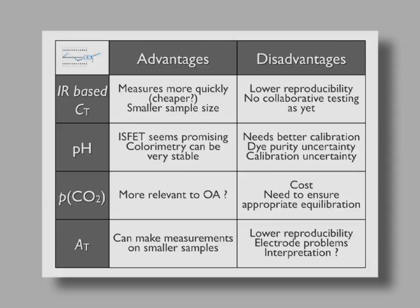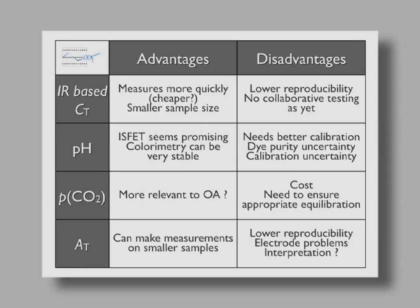For alkalinity, we currently measure 100 ml samples. In principle, smaller samples can be used, but at the moment that ends up with lower reproducibility. The electrode problems are what get you for alkalinity — when it works, it works really well. We can train somebody within a day and they can make measurements almost as good as the best people the next day. The real difference is that experienced people can tell when something's wrong, and somebody new can't.